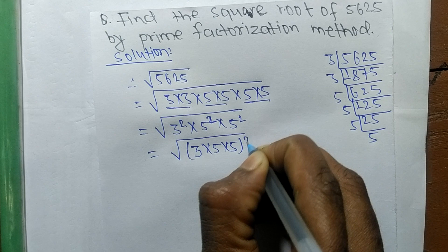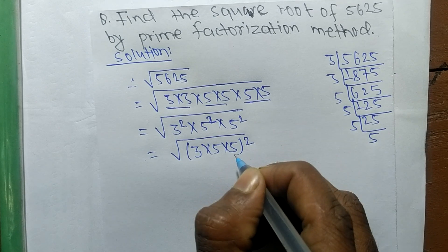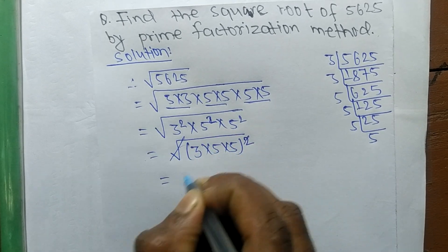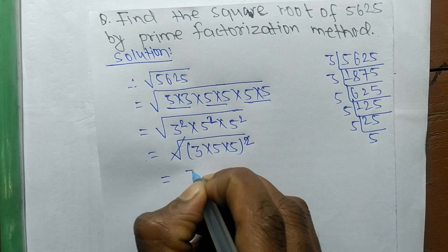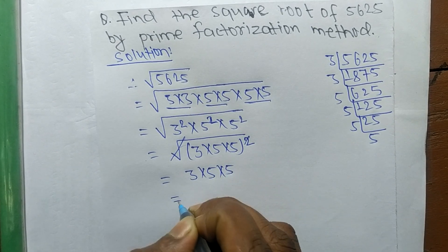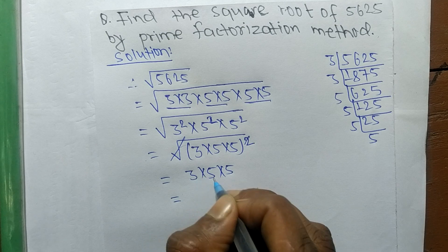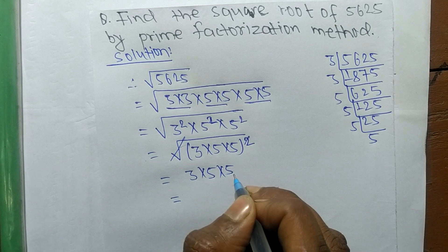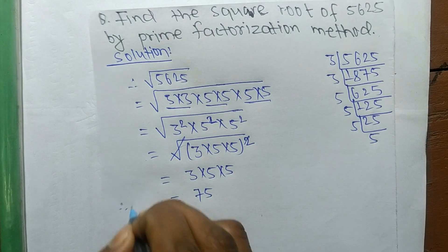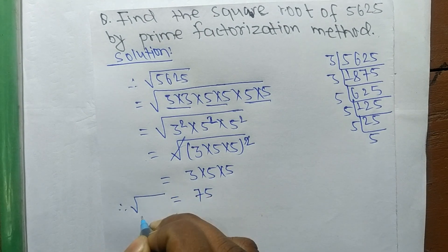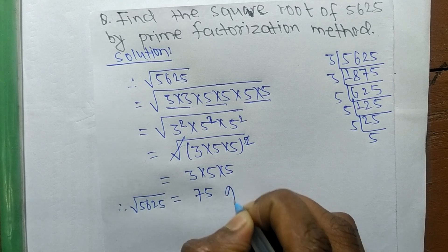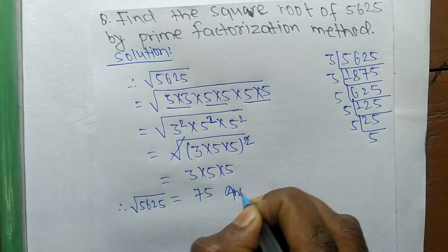The square and square root cancel each other, so the remaining part is 3 into 5 into 5. So 3 into 5 means 15, and 15 times 5 means 75. Therefore, the square root of 5625 is equal to 75.